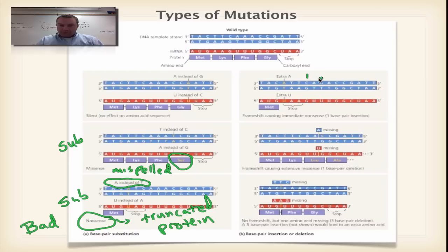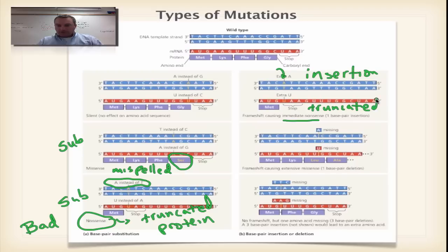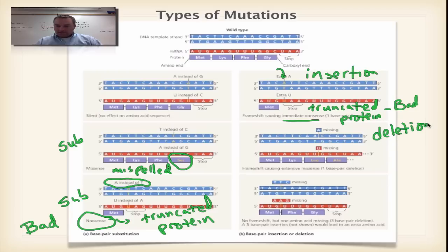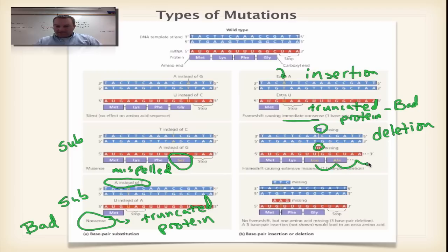Now let's look at some frame shifts. Here we have an insertion — we've stuck in an A, which pairs with a T — and this creates an immediate nonsense: a stop codon at the wrong place. Once again we have a truncated protein. That protein has no function; it could be a lethal mutation for that organism. In this one down here, we have a deletion — we've taken away an A, so our reading frame shifts to the left, and every amino acid from that point on is different, producing a totally different shaped protein that probably won't function, causing problems for the organism.